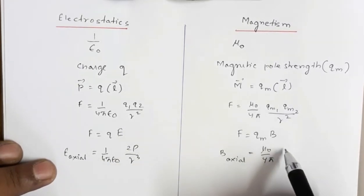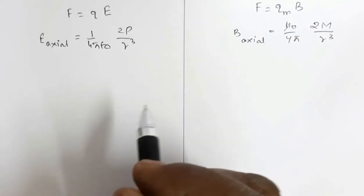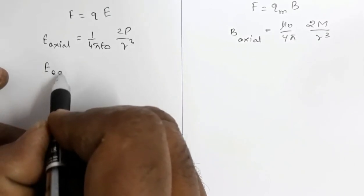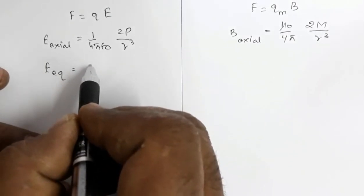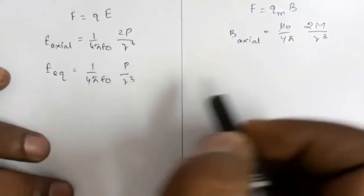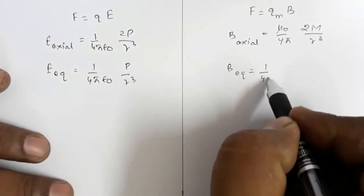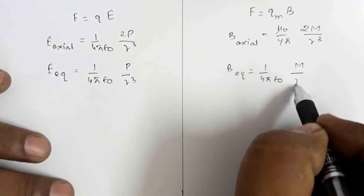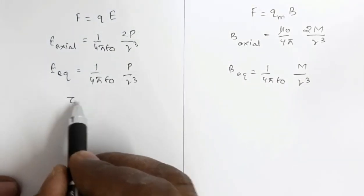Similarly, the electric field along the equatorial line of an electric dipole is E_equatorial = (1/4πε₀) × P/r³. The corresponding magnetic field along the equatorial line is B_equatorial = (μ₀/4π) × M/r³.